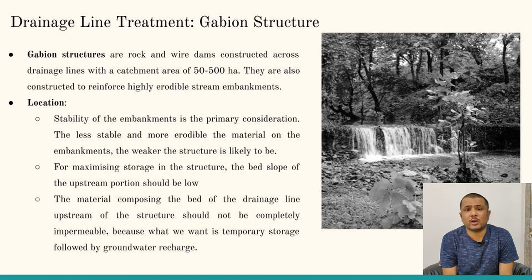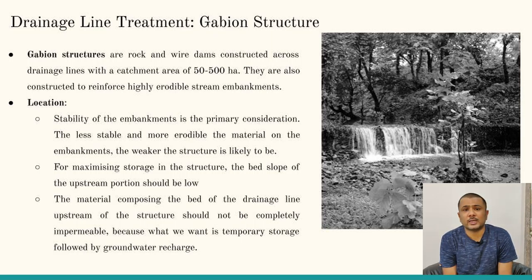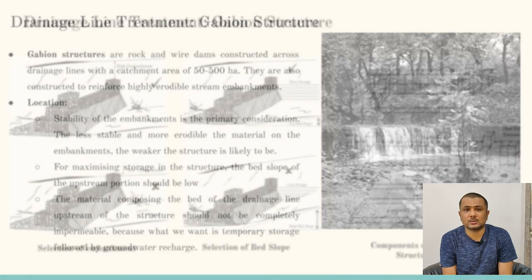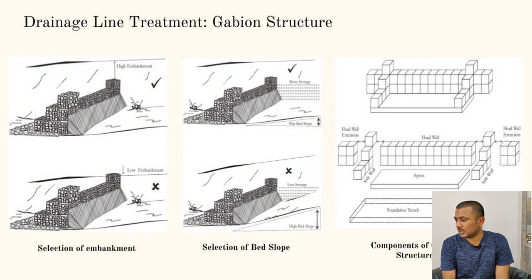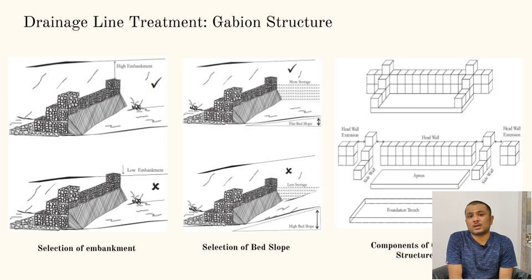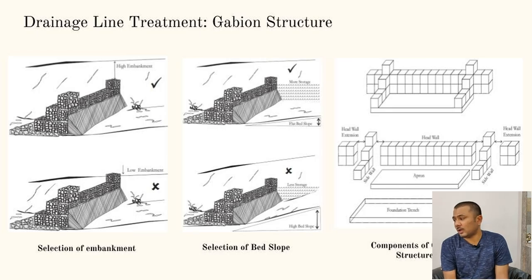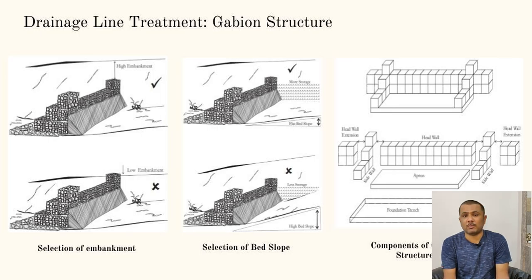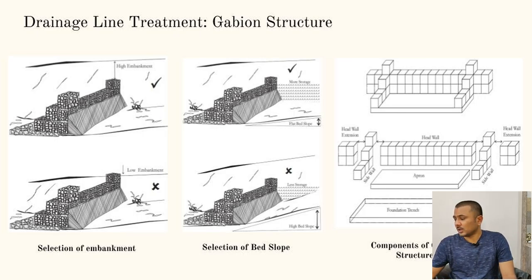The third aspect for selecting the gabion site is the material at the bed — if the bed material is impermeable, less groundwater is recharged; if permeable, more groundwater is recharged. The components of a gabion structure include a foundation trench, over which an apron is placed. The apron is a protective cover constructed on the upstream and downstream bed. Side walls and head wall extensions are embedded within the embankments to provide stiffness to the gabion structure.